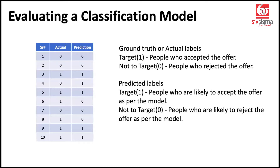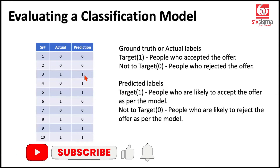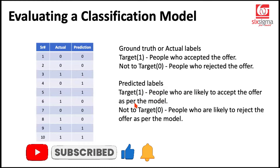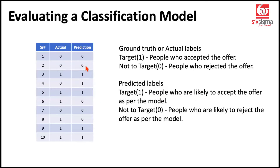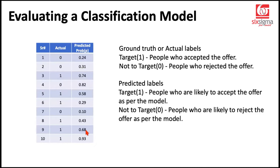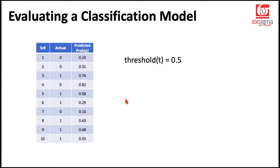Based on the model, we will try to come up with predictions. Prediction is something which is yet to happen. When you predict a one, it represents people who are likely to accept the offer as per the model; a zero represents people likely to reject the offer. Models don't generally predict the classes directly — they predict the probabilities. These probabilities are then compared with a threshold, which is by default set to 0.5 in most models.